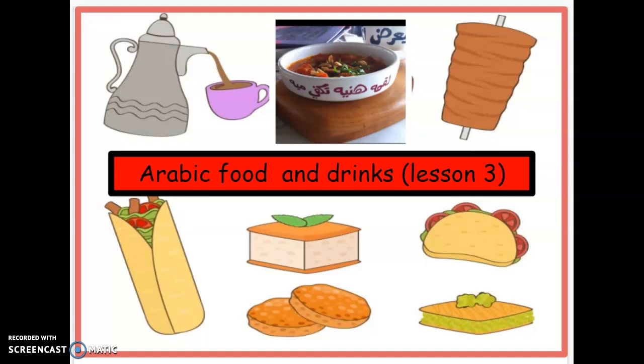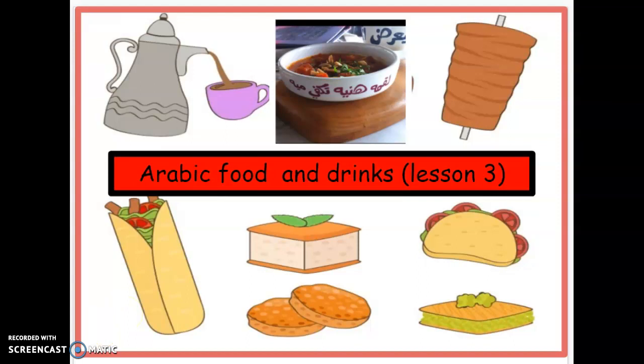Boys and girls, today we are continuing our unit on Arabic food and drinks, and here we are on lesson three. Let's have a look at this yummy picture. I see here coffee and kahwa. This looks like a soup or is it a salad? And here I have the yummy shawarma, a gyro sandwich and some sweets. So let's see what this lesson has in store for us for food and drinks in Arabic.